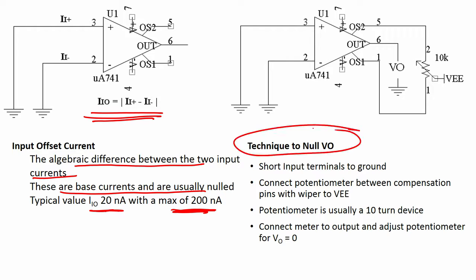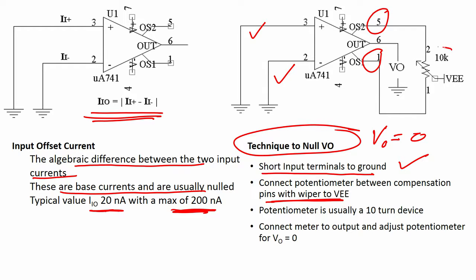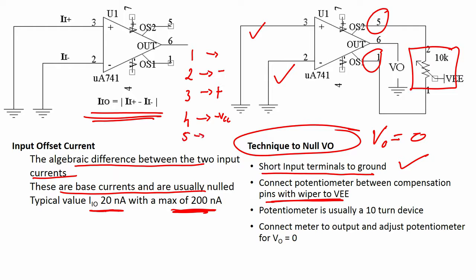To null the output voltage Vio, first short the input terminals to ground. Then connect a potentiometer between the compensation pins and Vee with the wiper. For the LM741, pins 1 and 5 are used for offset nulling. The device has 8 pins: pin 2 is inverting, pin 3 is non-inverting, pin 4 is −Vcc, pin 6 is output, pin 7 is Vcc, and pins 1 and 5 are used for offset nulling.